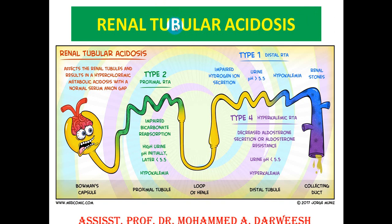Today I will talk about renal tubular acidosis. This is a suggested picture of the kidney nephron, consisting of the glomerulus, proximal convoluted tubule, loop of Henley, distal convoluted tubule, and the collecting duct.